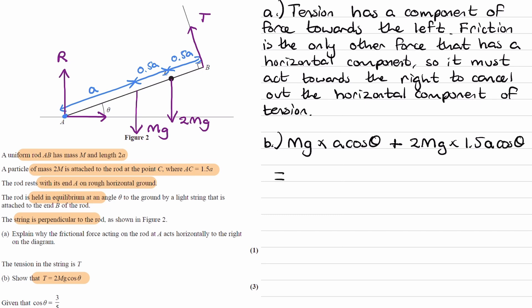Those are the clockwise moments. Set them equal to the anti-clockwise moments. That'll be T multiplied by the perpendicular distance, which is just 2a. T is perpendicular to the rod, so we just times that by 2a. A's cancel out. And then we're left with 2T is equal to mg cos theta plus 2 times 1.5, which is 3, so 3mg cos theta. The right-hand side will end up being 4mg cos theta. Divide by 2, and we get 2mg cos theta. That's part B done.